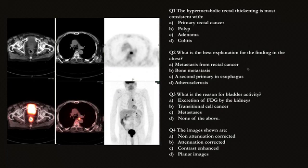We typically read through the attenuation corrected images and pull the non-attenuation corrected images only when needed. The study is non-contrast enhanced and a low-dose CT, which is typically used for attenuation correction and anatomical localization. FDG is excreted by the kidneys into the urinary bladder. Focal urethral uptake can be confused with metastatic lymphadenopathy. Synchronous cancers are defined as those occurring within six months of the first primary cancer, while metachronous cancers are defined as those occurring more than six months later.